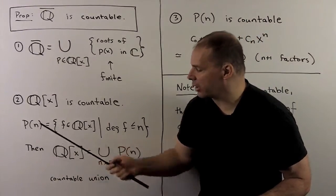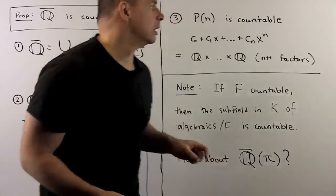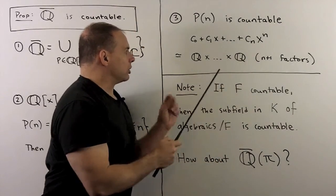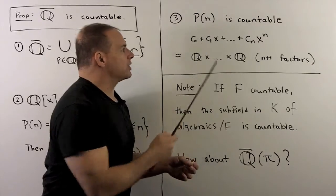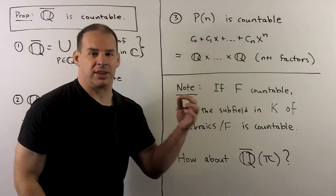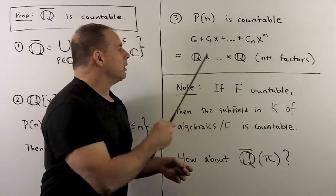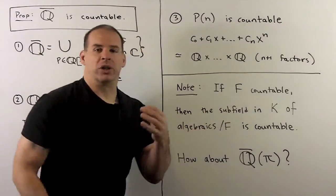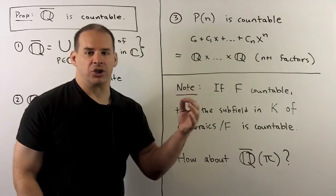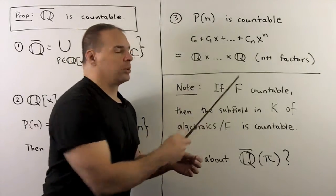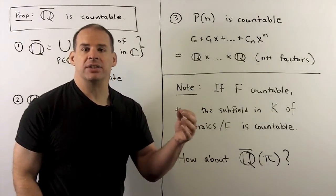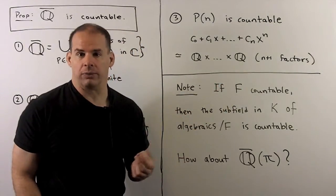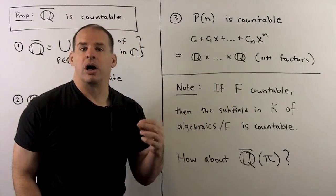So we show that each of these are countable. Now any element in here is going to look like c0 plus c1x all the way up through cn x to the n. The c's are going to be in the rationals. So this set is really just a finite product of rationals. Because we have a finite product of countable sets, that itself is going to be countable, and that's the result we're looking for. So Q bar is countable.